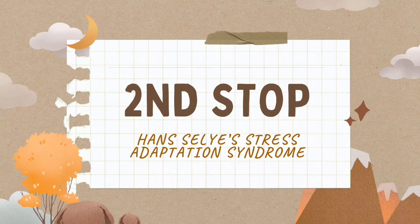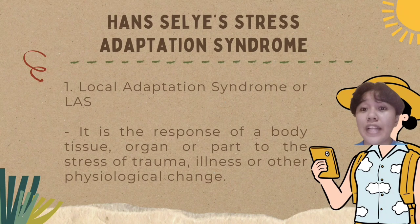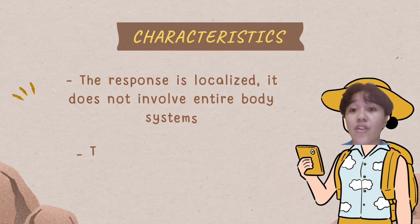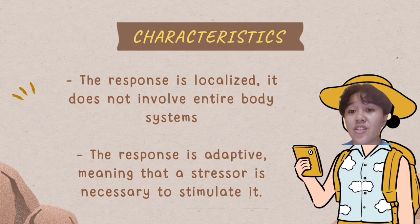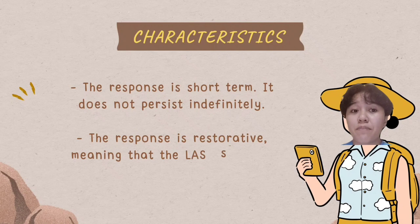Second stop: Hans Selye's Stress Adaptation Syndrome. He created the Hans Selye Stress Adaptation Model. First, the Local Adaptation Syndrome, or LAS. It is the response of a body tissue or organ to the stress of trauma, illness, or other physiological change. Its characteristics are as follows: first, the response is localized — it does not involve entire body systems. Second, the response is adaptive, meaning that a stressor is necessary to stimulate it. Third, the response is shorter — it does not persist indefinitely.